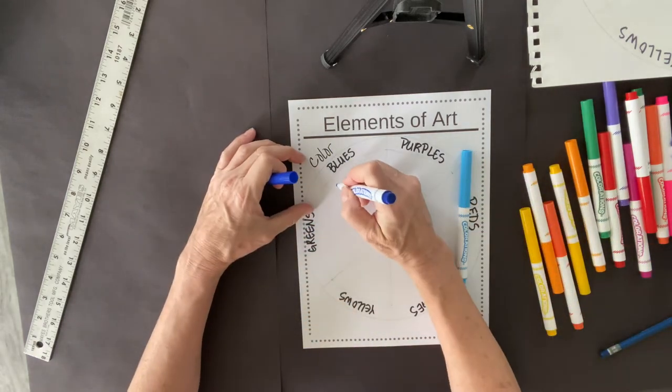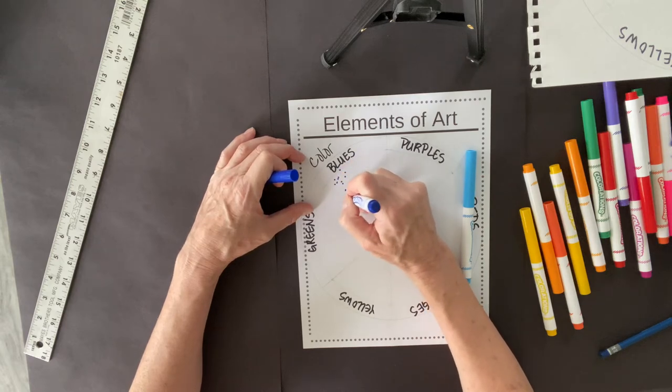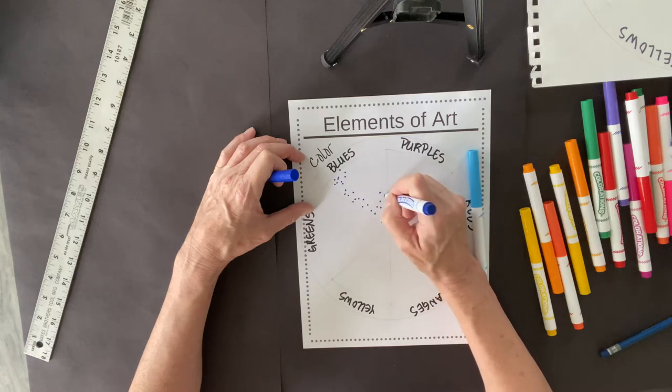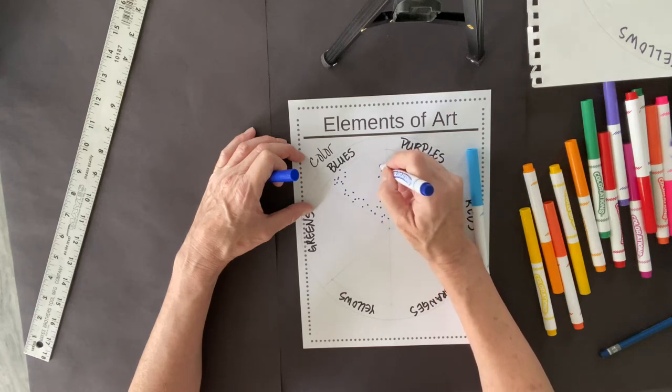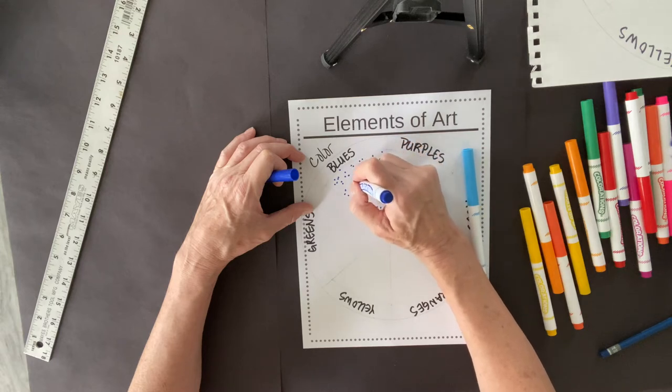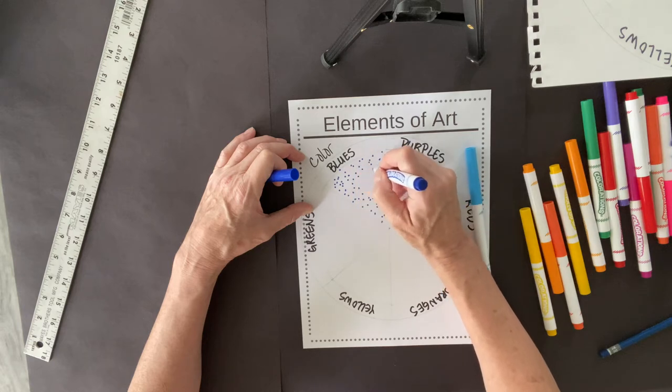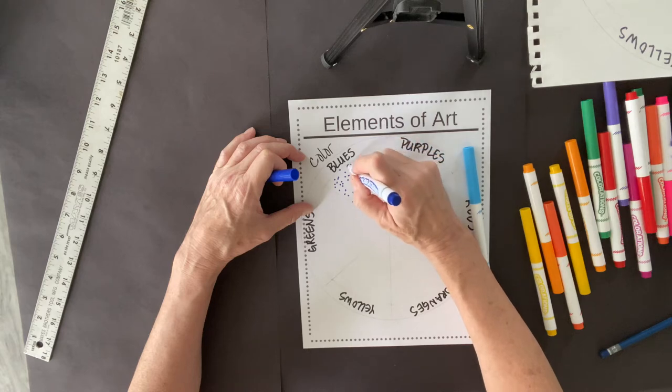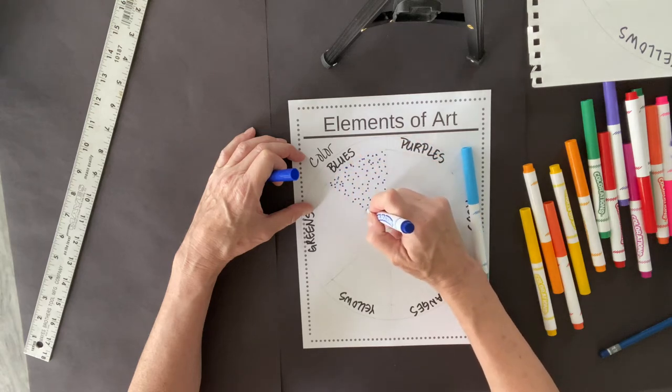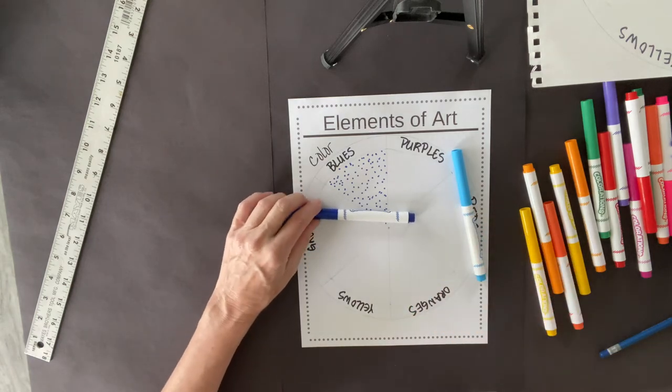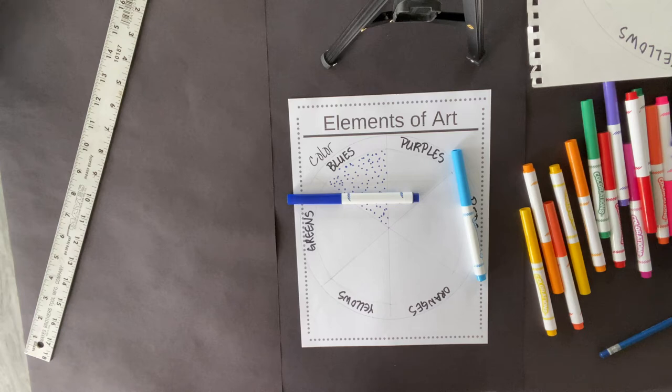So for the blues, I'm just going to start doing blue dots everywhere. I happen to have two different blue markers, so I'm going to use both of them. I'm going to cover this space as best I can with this dark blue, and then when I feel like I've got a lot, I'm going to start adding light blue. But what I'm going to do is I'm going to speed this up so that you can watch me in a faster time.